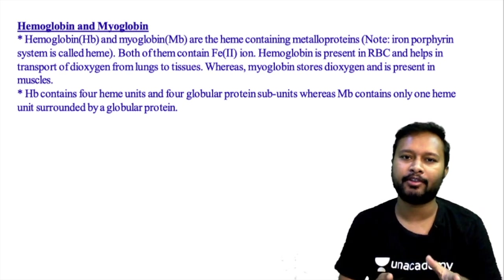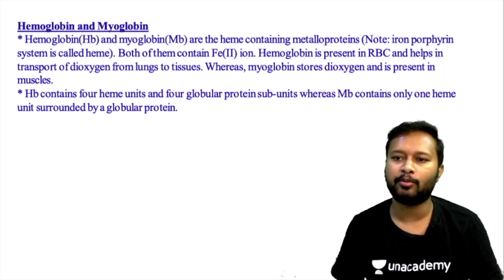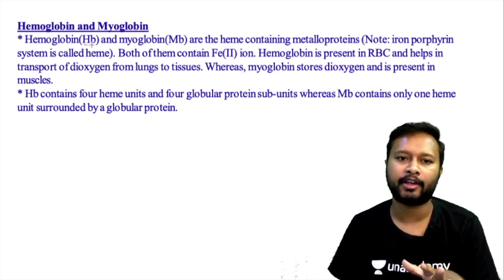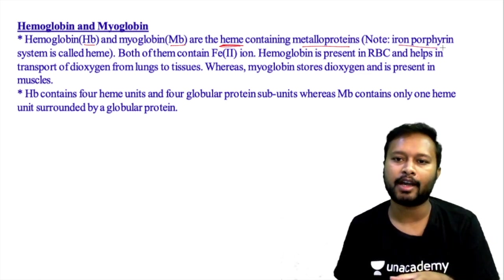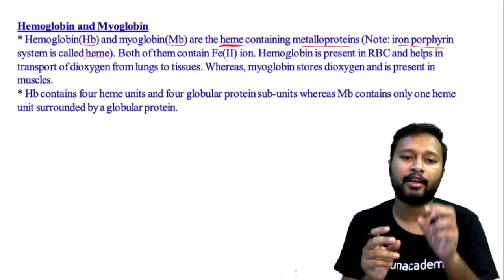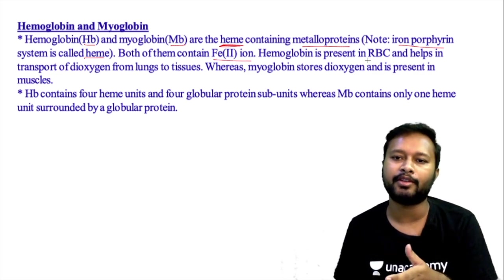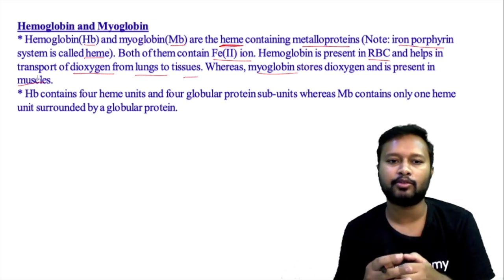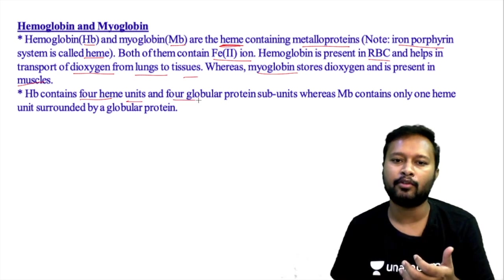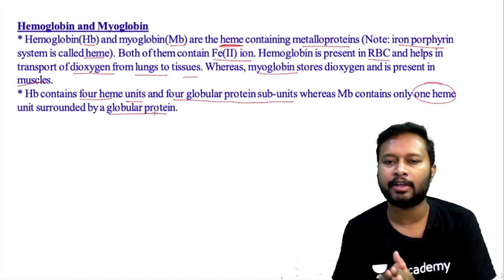Now hemoglobin and myoglobin to finish. Both are heme-containing metalloproteins — the iron-porphyrin system is called heme. Both contain iron in +2 oxidation state. Hemoglobin (Hb) is present in RBCs and transports dioxygen from lungs to tissues. Myoglobin (Mb) stores dioxygen in muscle. Hemoglobin contains four heme units with four globular protein subunits; myoglobin contains one heme unit surrounded by one globular protein.